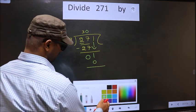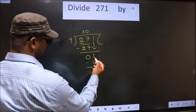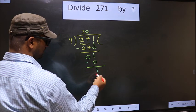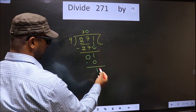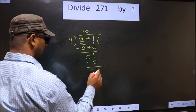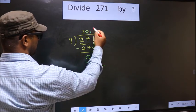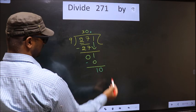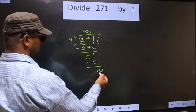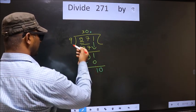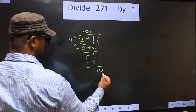Now you subtract 1 minus 0, 1. Over here we did not bring any number down, and 1 is smaller than 9, so now you can put a dot and take 0 here. So here 10, a number close to 10 in 9 table is 9 once 9.